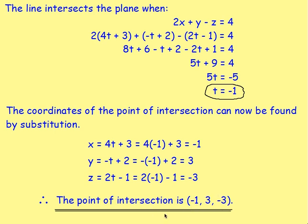Those values will be the x, y, and z coordinates of that point of intersection. So we can say the point of intersection is (-1, 3, -3).